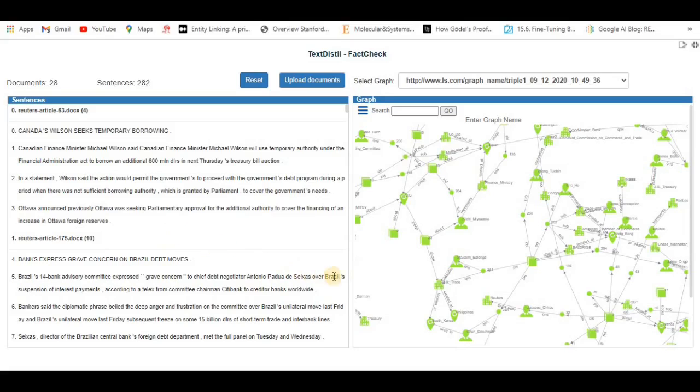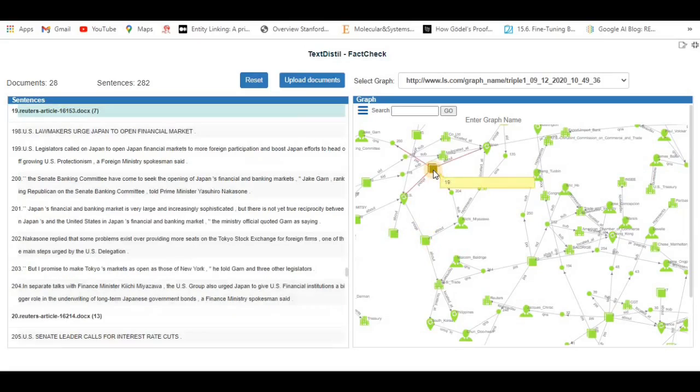For example, we can select a document and it highlights the title of the document in the left. We can select a triple in the document and see how the text that is highlighted can be the basis for such a triple.